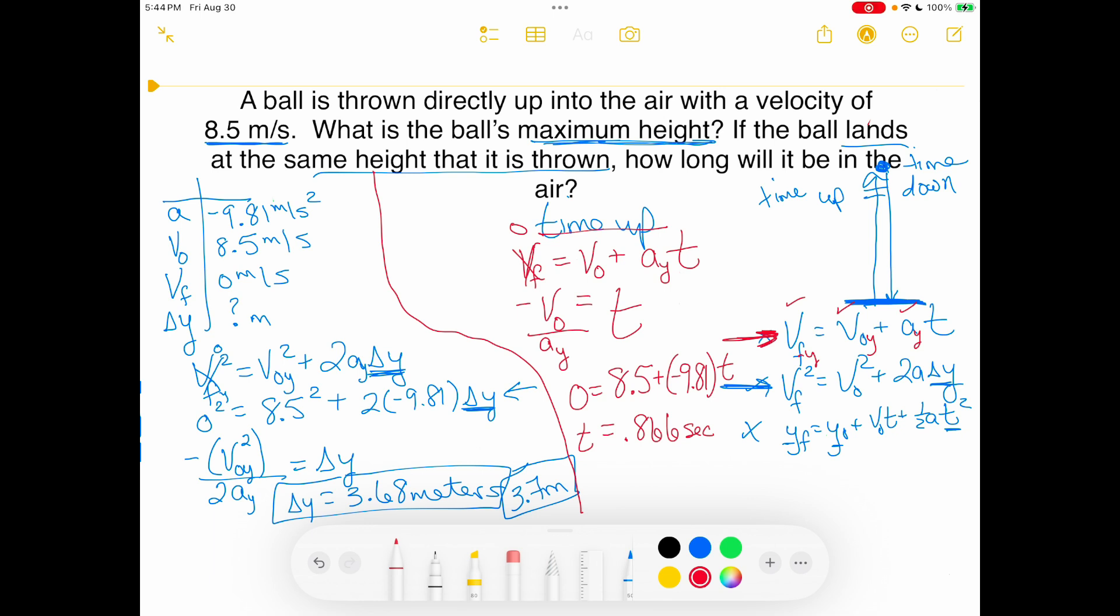Now that is time up. Now we said time up, which is 0.866 equals time down, which is 0.866. So if I want total time before this ball lands, how long will it be in the air? You're going to have to add those two up. So my total time is going to be 0.866 plus 0.866, which ends up being 1.7 seconds. So that's the problem.